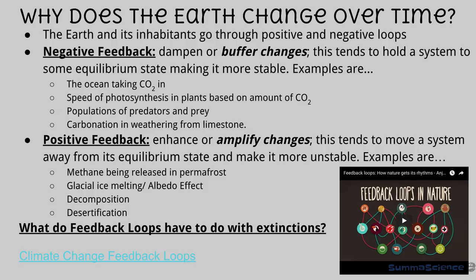Now on to the idea of feedback loops. Feedback loops are responsible for the earth changing over time as well as systems staying the same over time. Negative feedback loops dampen or buffer changes in a system in order to keep them in balance. Think of the relationship between plants and animals — as animals breathe in oxygen and breathe out carbon dioxide, plants take that carbon dioxide, create energy, and release oxygen back into the atmosphere. These changes over enough time keep a balance in the relationship of carbon dioxide and oxygen.